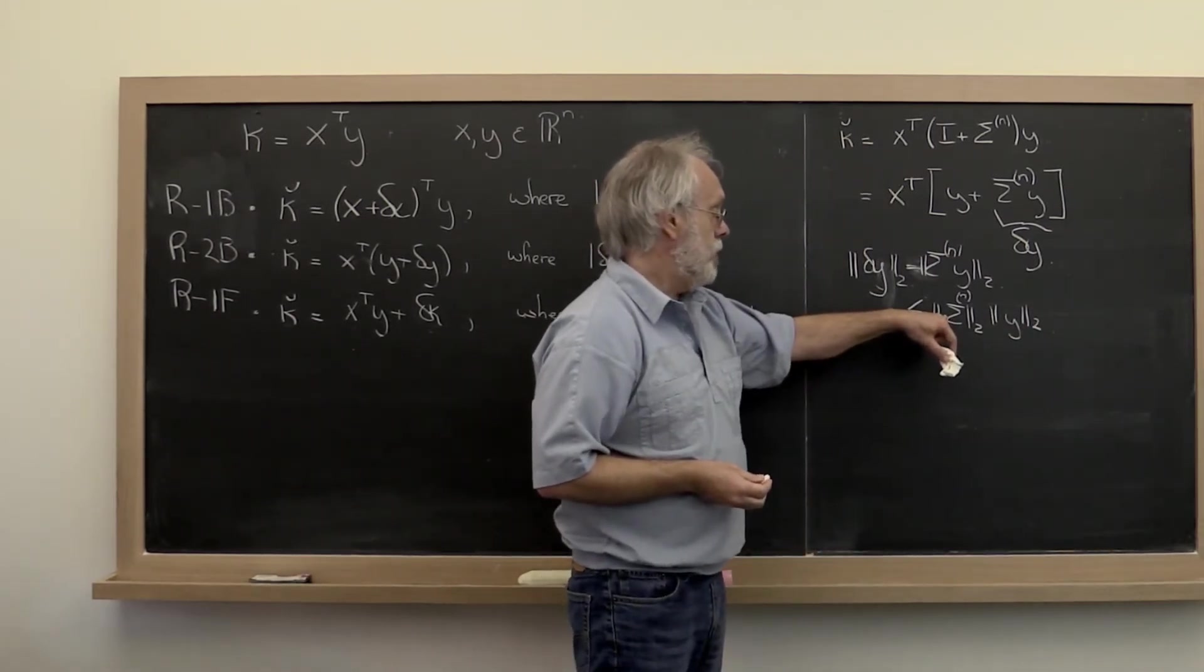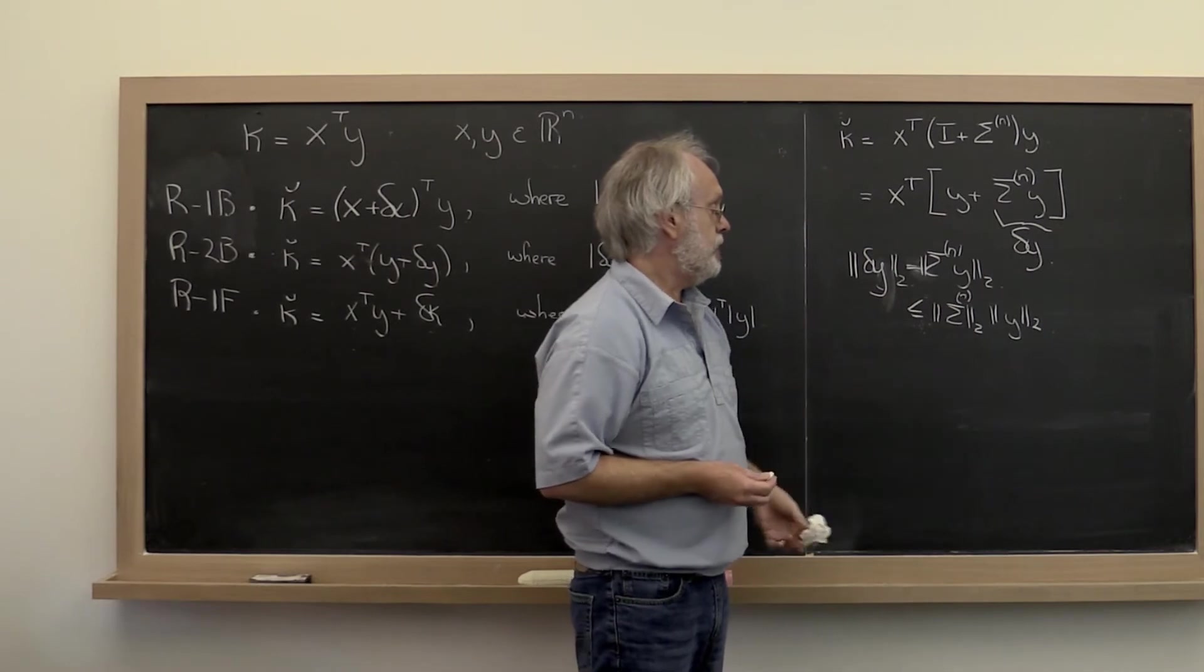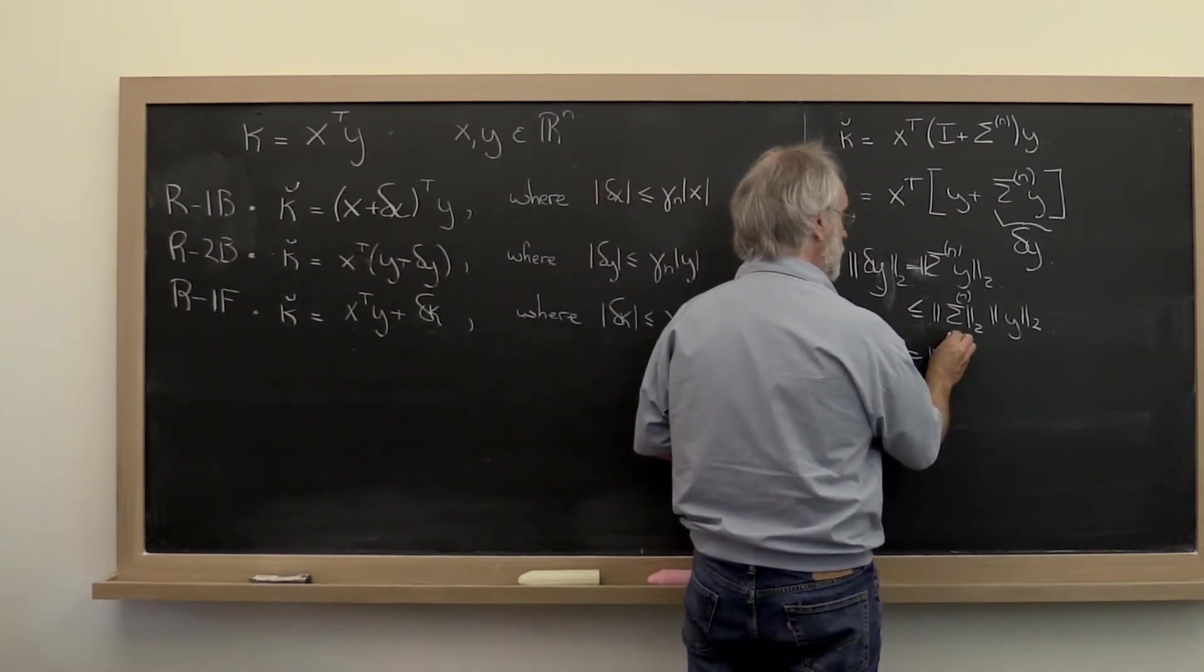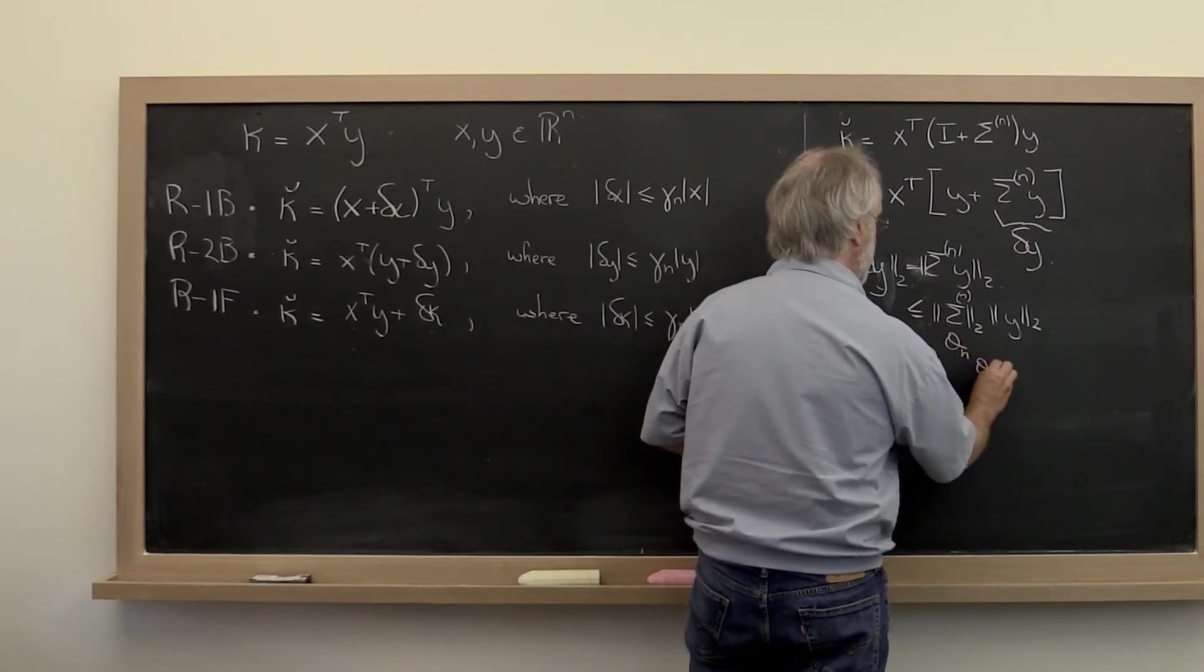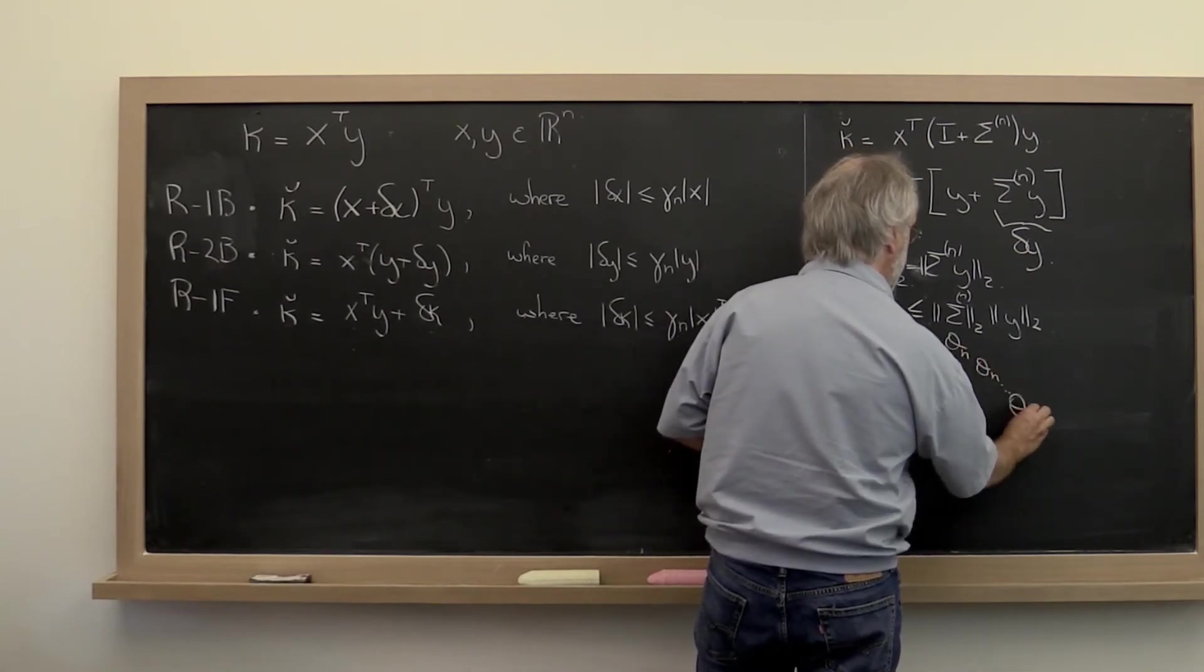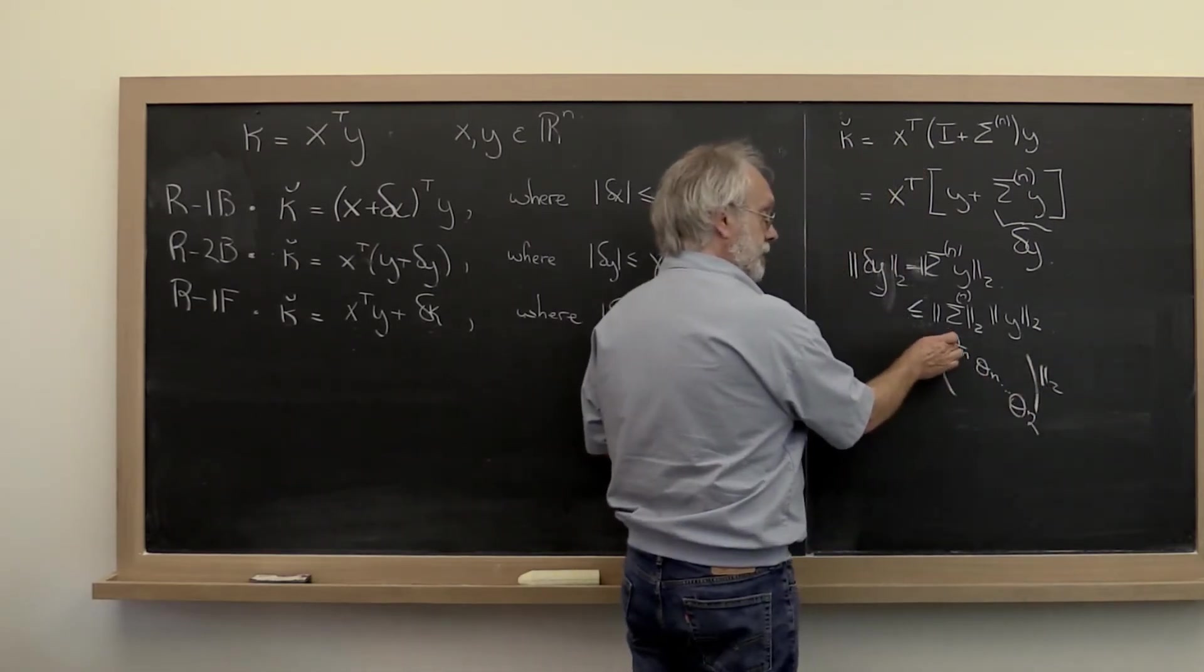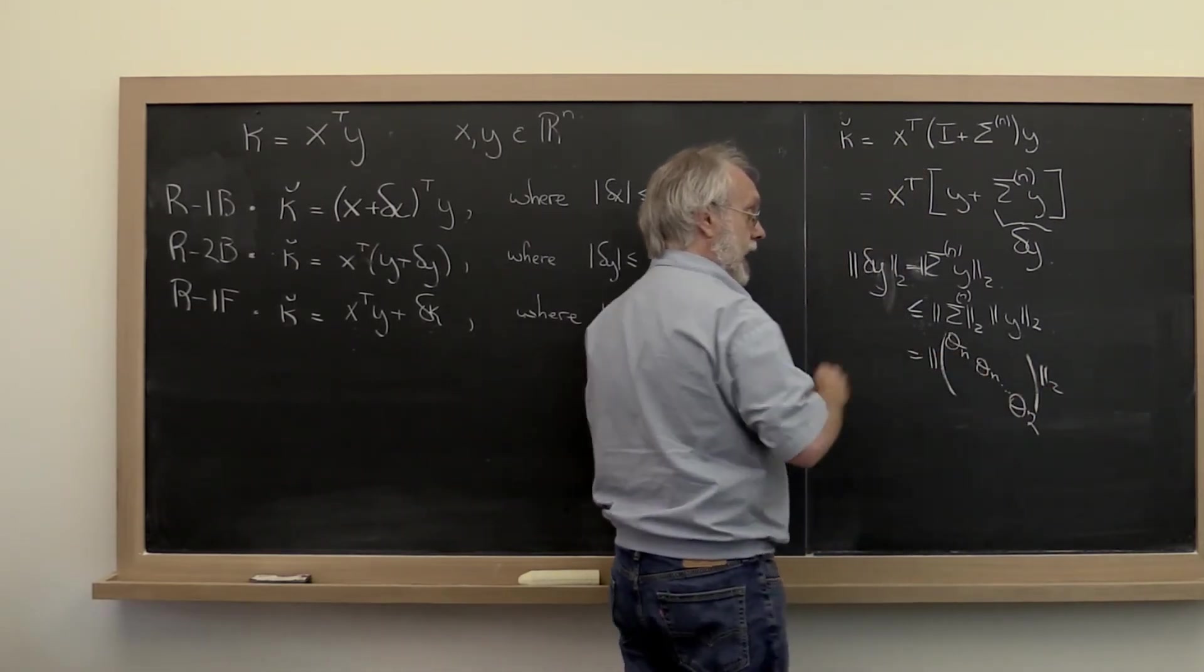And remember that the diagonal matrix consisted of the values theta n, theta n, through theta 2. And it was this first one, there was this first order of magnitude terms...